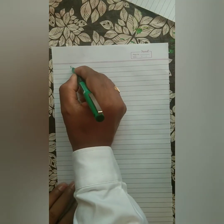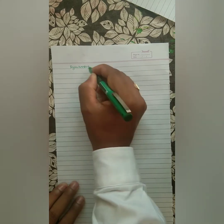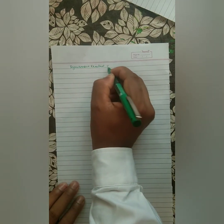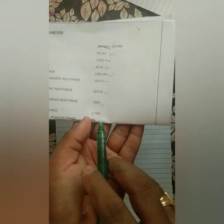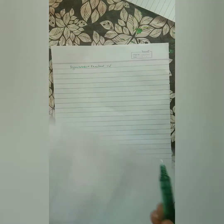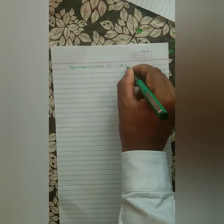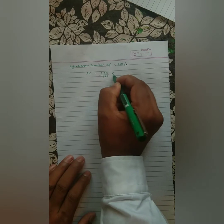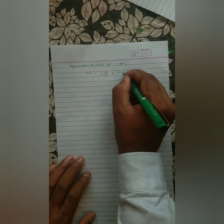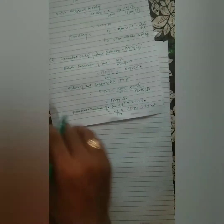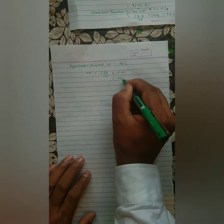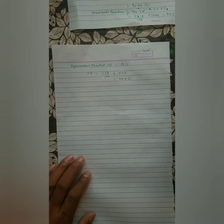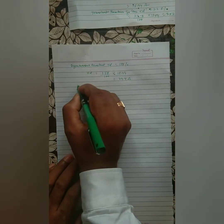The synchronous reactance Xd is 158%. So Xd in ohm = 158/100 × 15.44 = 24.4 ohm. After that we calculate the offset setting.